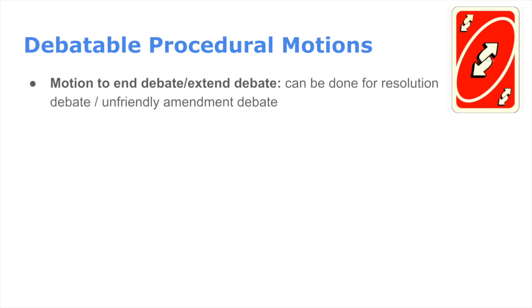Now we have debatable procedural motions, where there's some debate on whether the motion will go through. The first is motioning to end debate or extend debate. This can be done for resolutions or for unfriendly amendment debate. End debate is used when you have a long speakers list and people think the point's been made and it's time to move on. Or if you have a very lively debate that seems too short, you can extend it. Technically, per the manual, you can have a pro speaker and a con speaker, and then the committee votes.